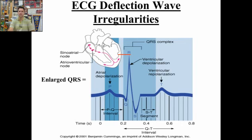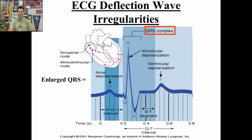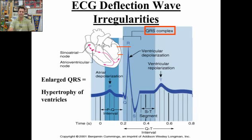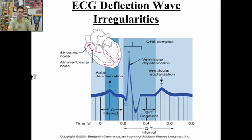We can also have an enlarged QRS — manipulated here through Photoshop, of course — and this is reflective of hypertrophy of the ventricles. When the ventricles get overly enlarged, you have a larger or bigger QRS complex.